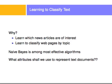I'm going to talk about classifying text using Naive Bayes. Why? Well, we can learn, for example, which news articles are of interest, or we can learn which reviews are good, which reviews are bad. We can mine text for certain concepts. We can classify web pages by topic. There are a lot of applications when we talk about text classification, and Naive Bayes is among the most effective algorithms to do this.